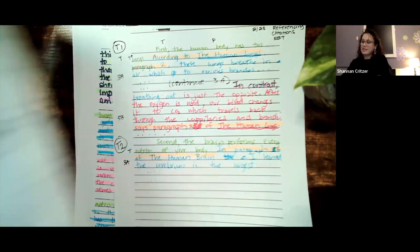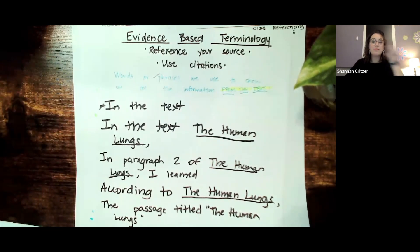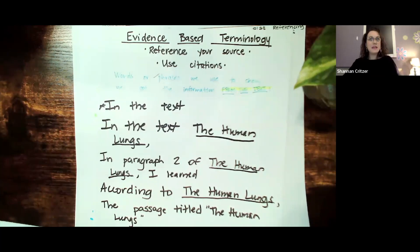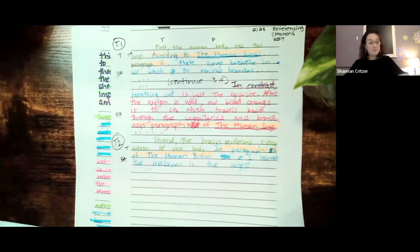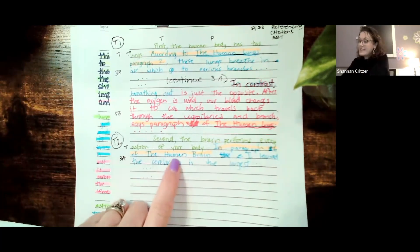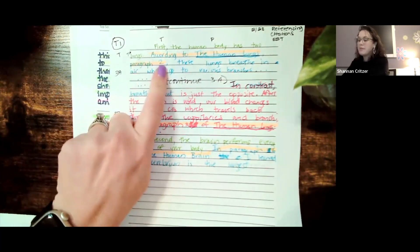This is where we were adding our evidence-based terminology — that's something else that we learned about. Let's look at that chart real quick. Our evidence-based terminology is referencing our source, citing where we got the information from. And we said a lot of state rubrics will tell you that you need to make sure that you're citing your source, making the connection between and among your ideas from paragraph to paragraph, and telling the reader — because it's a text-based essay — that you got that information from the text. This references where you got the information: according to the human lungs, paragraph two.